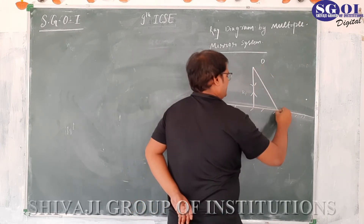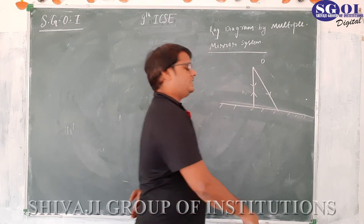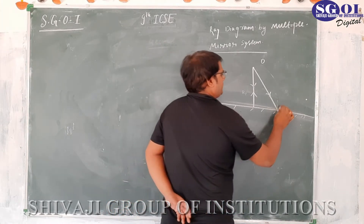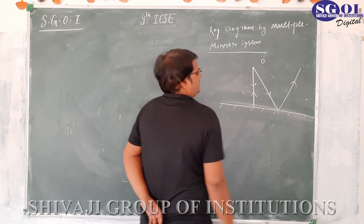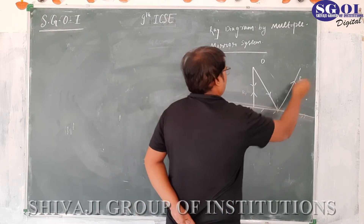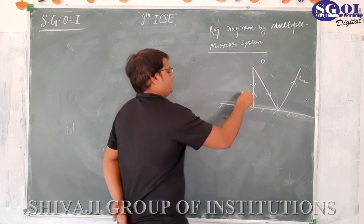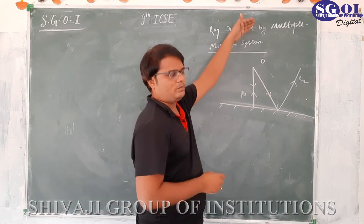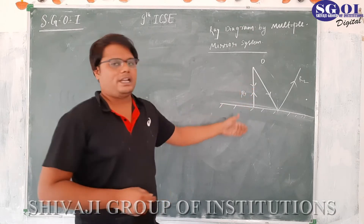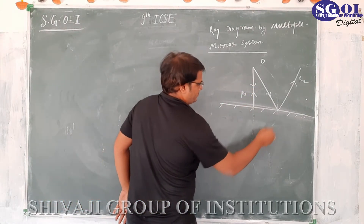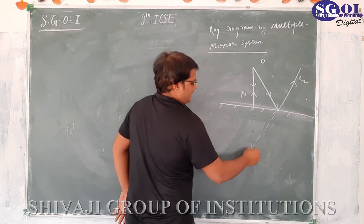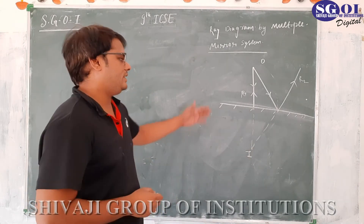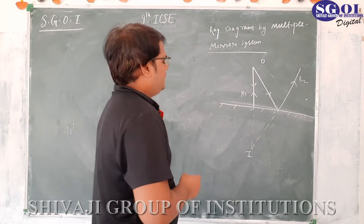Now let's take a second incident ray. We draw the normal, and after applying the law of reflection we get reflected ray 2. Reflected ray 1 and reflected ray 2 are not going to meet above the mirror, so we have to extend them behind the mirror — drawing them back like this.